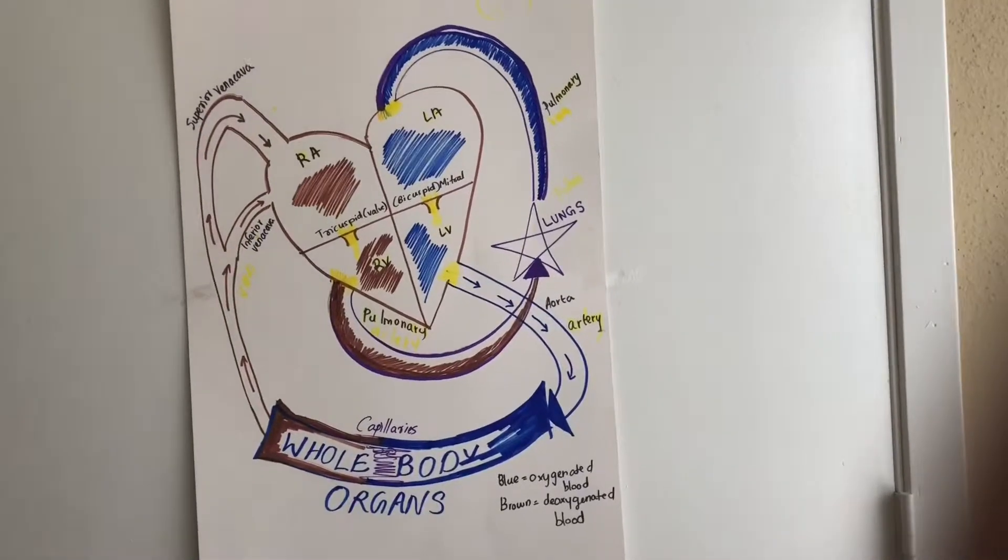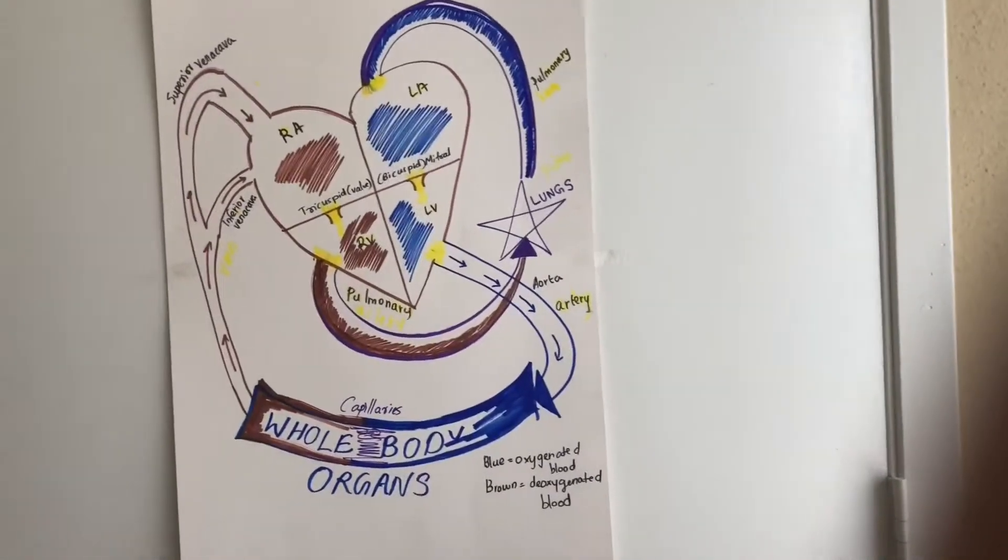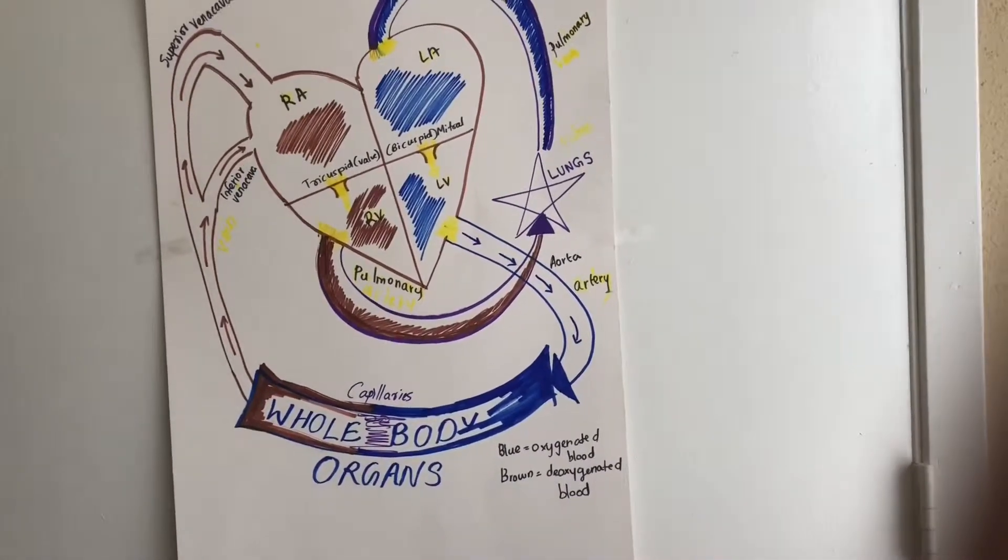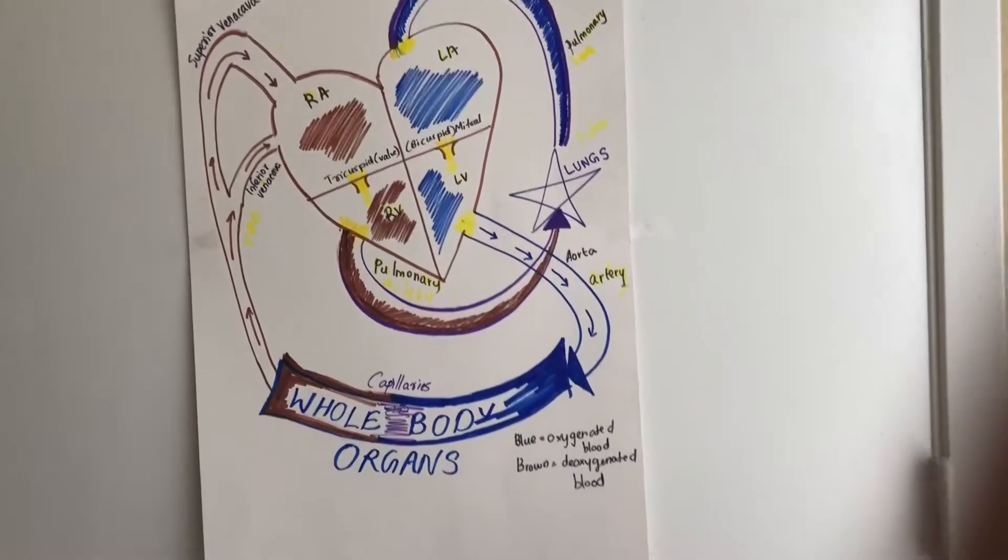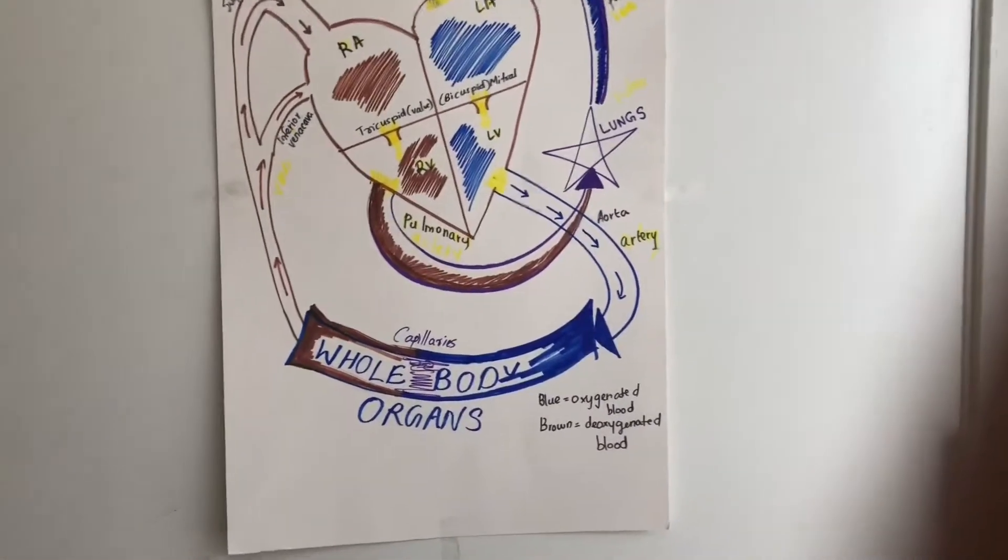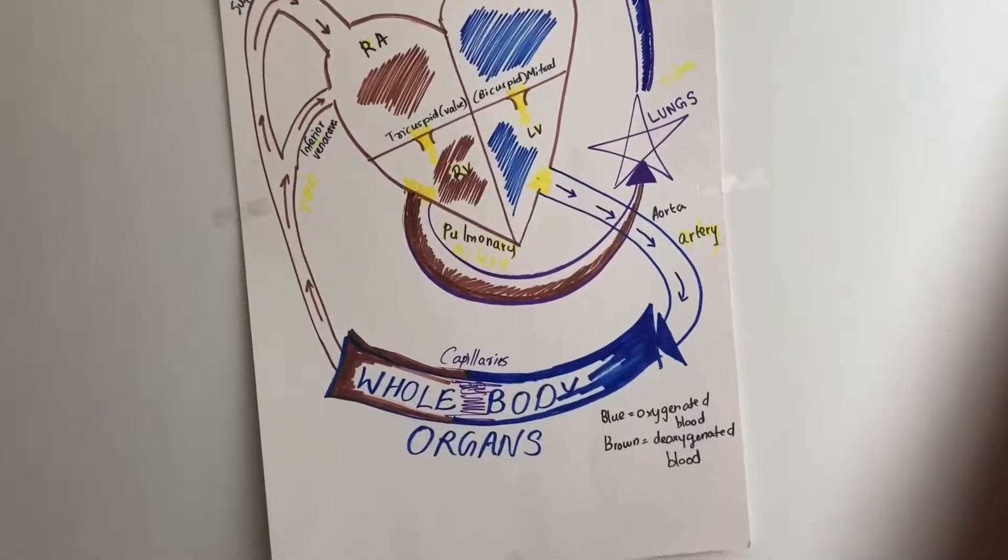The blood goes to the arteries. The blood with oxygen goes to capillaries and veins in the body.